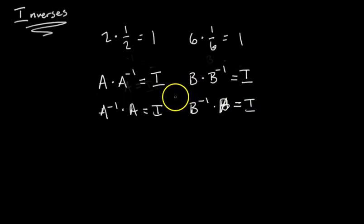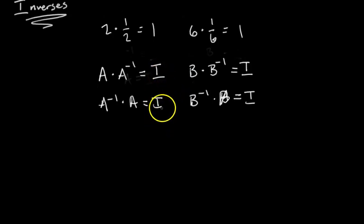So the property, the special thing about inverses is that when you take a matrix times its inverse, you get the identity matrix. And remember, what's the identity matrix? It's a matrix who has 1s along its main diagonal and 0s everywhere else.